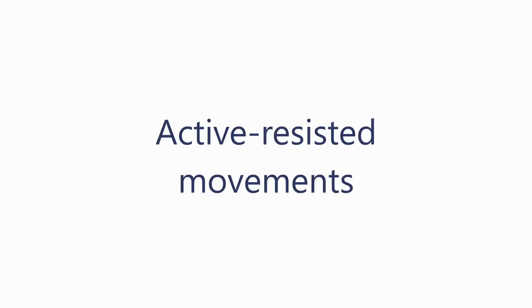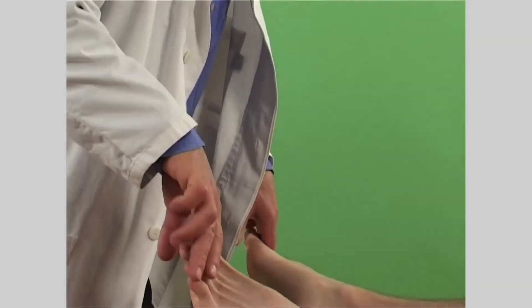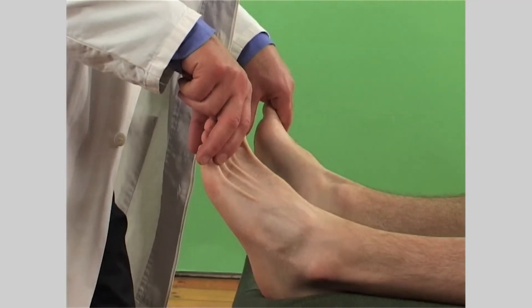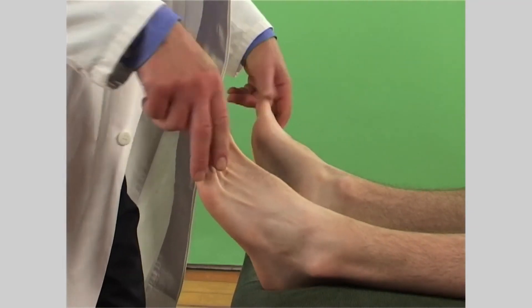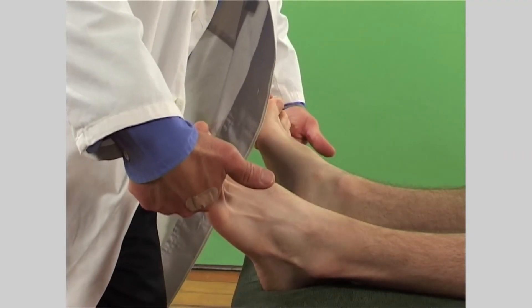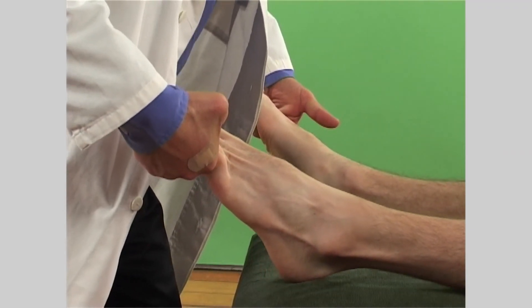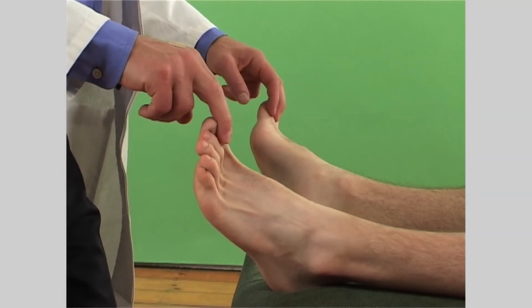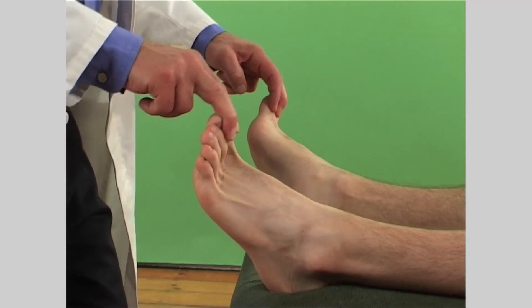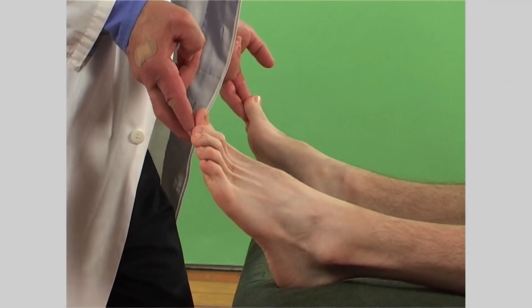In terms of active resisted movements of the foot, excluding those covered earlier for the ankle, include flexion and extension of the toes. Note the muscle strength, joint stability, the presence of pain or crepitations, and compare with the opposite side.